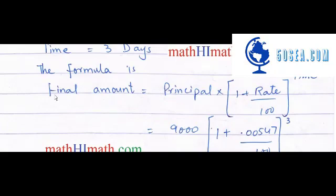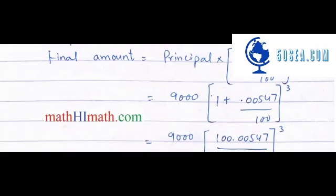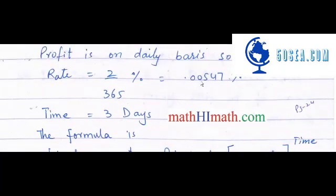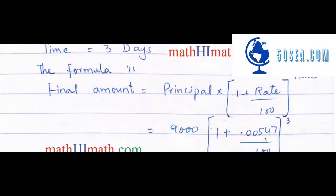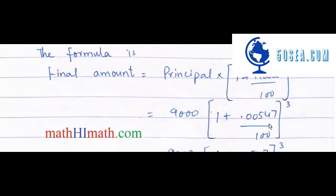The final amount formula is: A equals principal multiplied by (1 plus rate over 100) raised to the power of time. The principal amount is 9,000, and the rate we calculated is 0.00547 over 100.